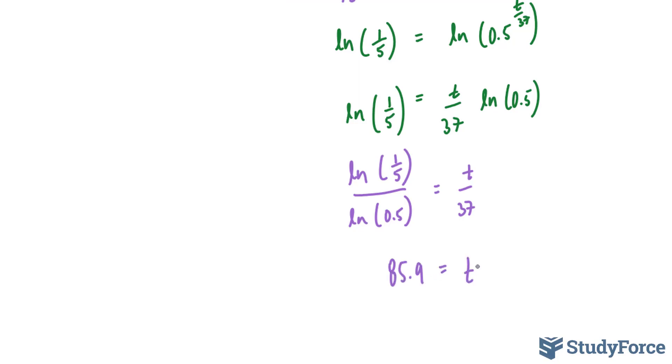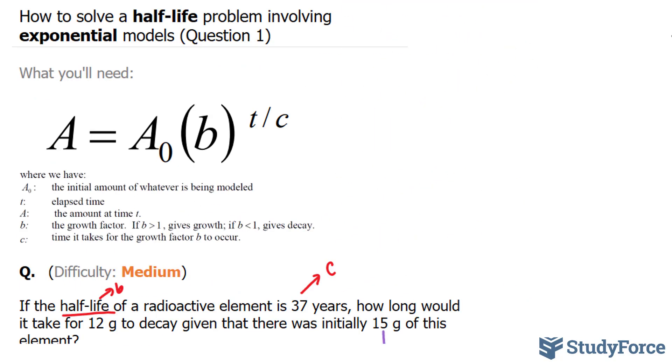So to conclude, we will say that it takes, therefore, 85.9 years for 12 grams to decay. And there it is. That is how to solve a half-life problem involving exponential models.